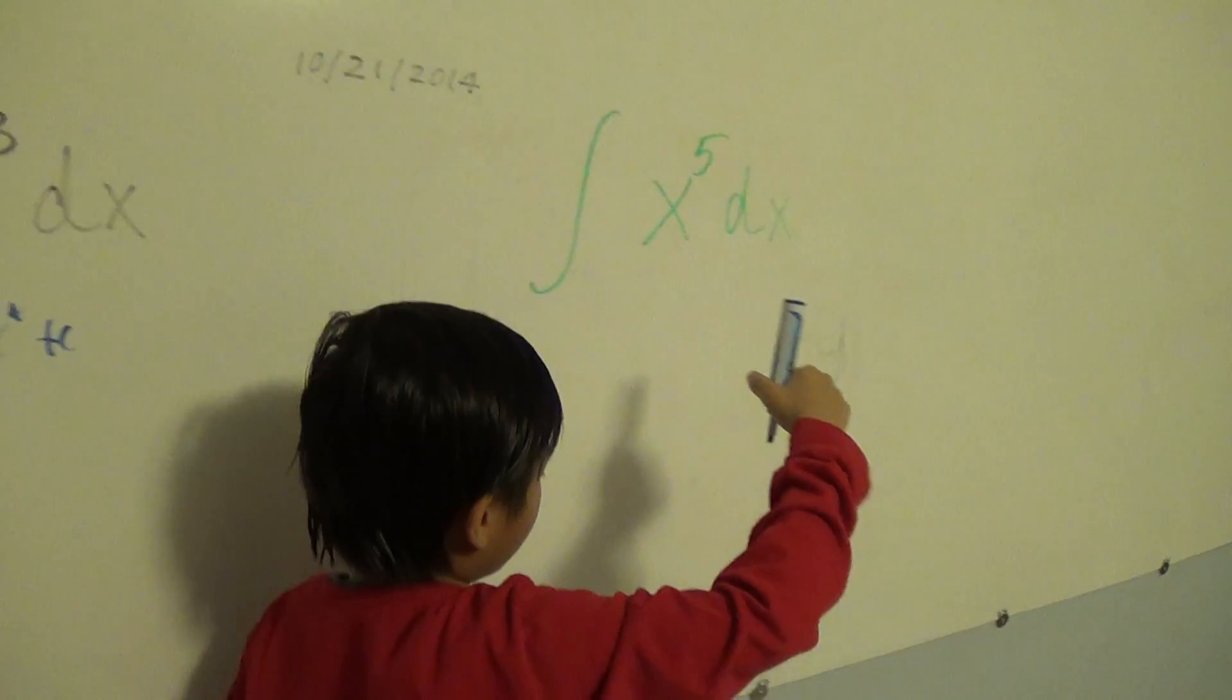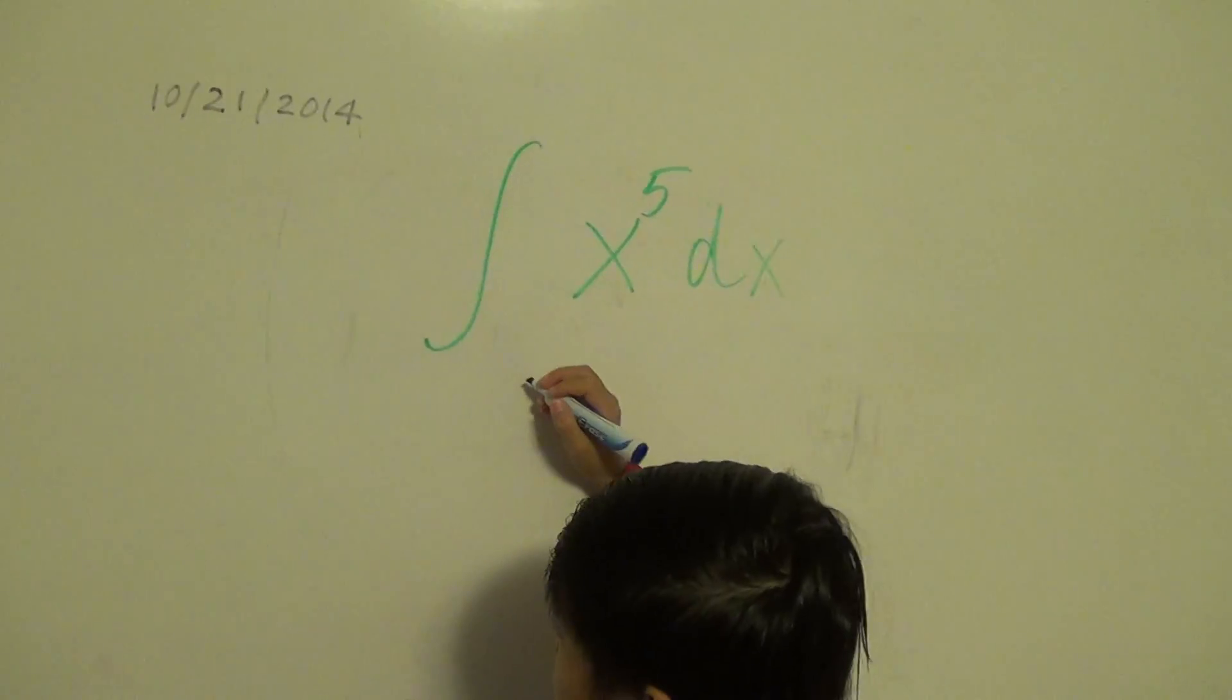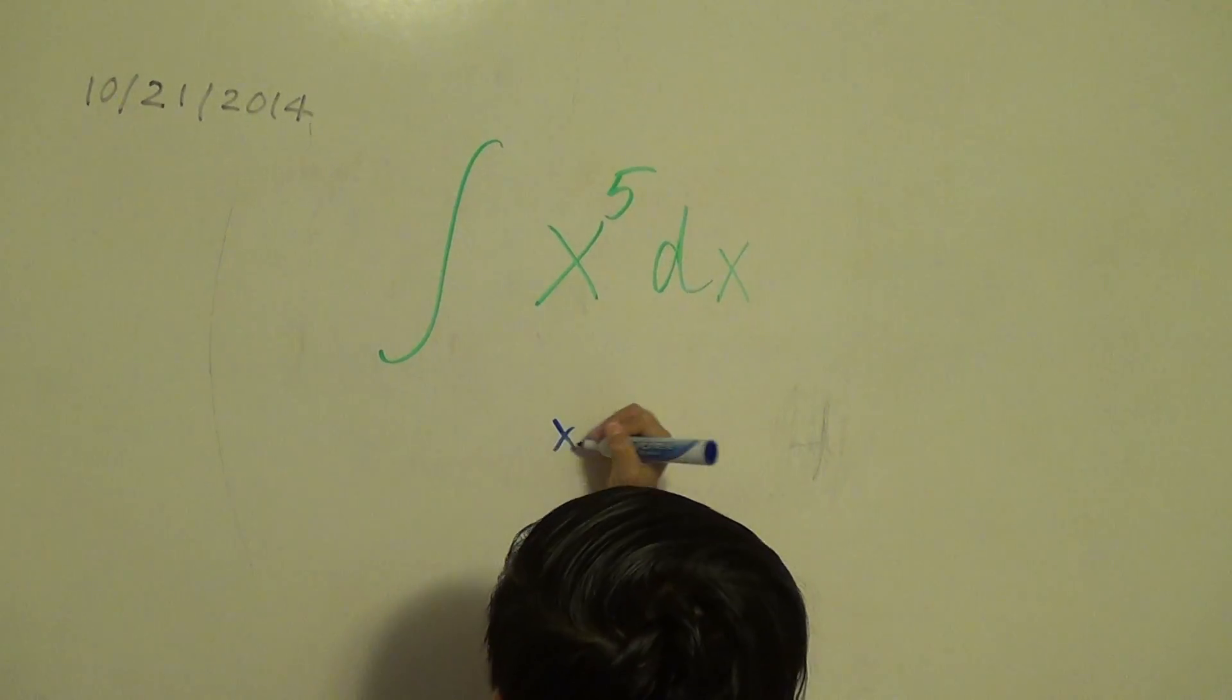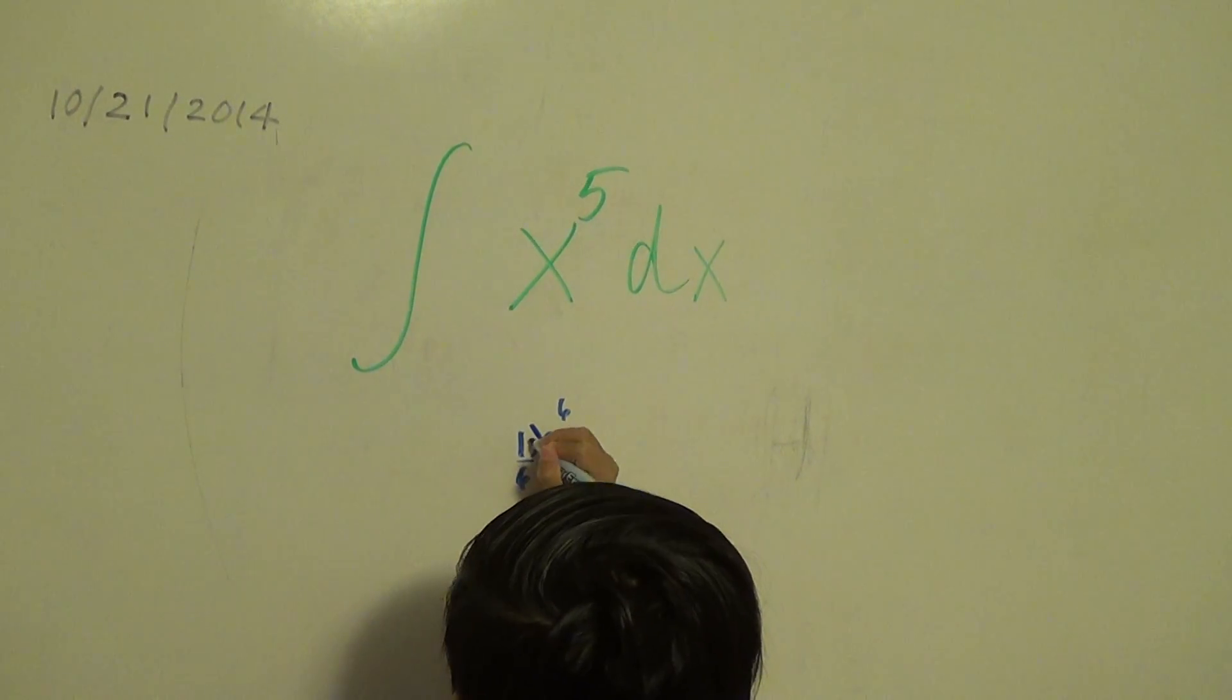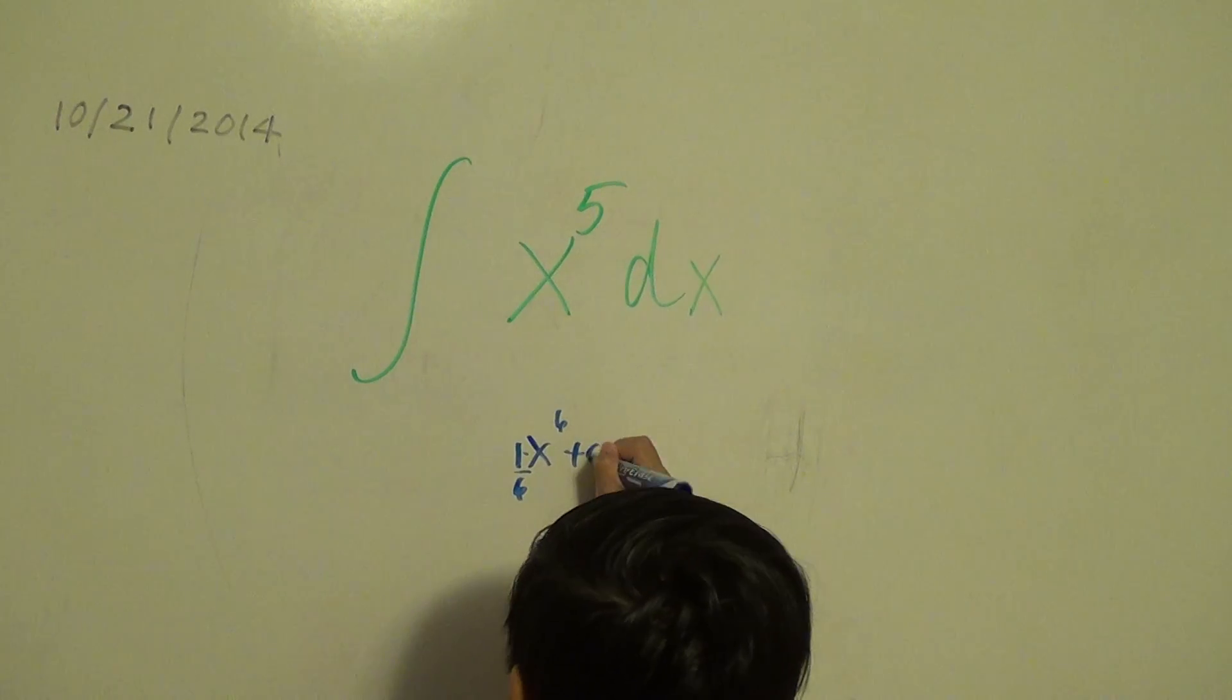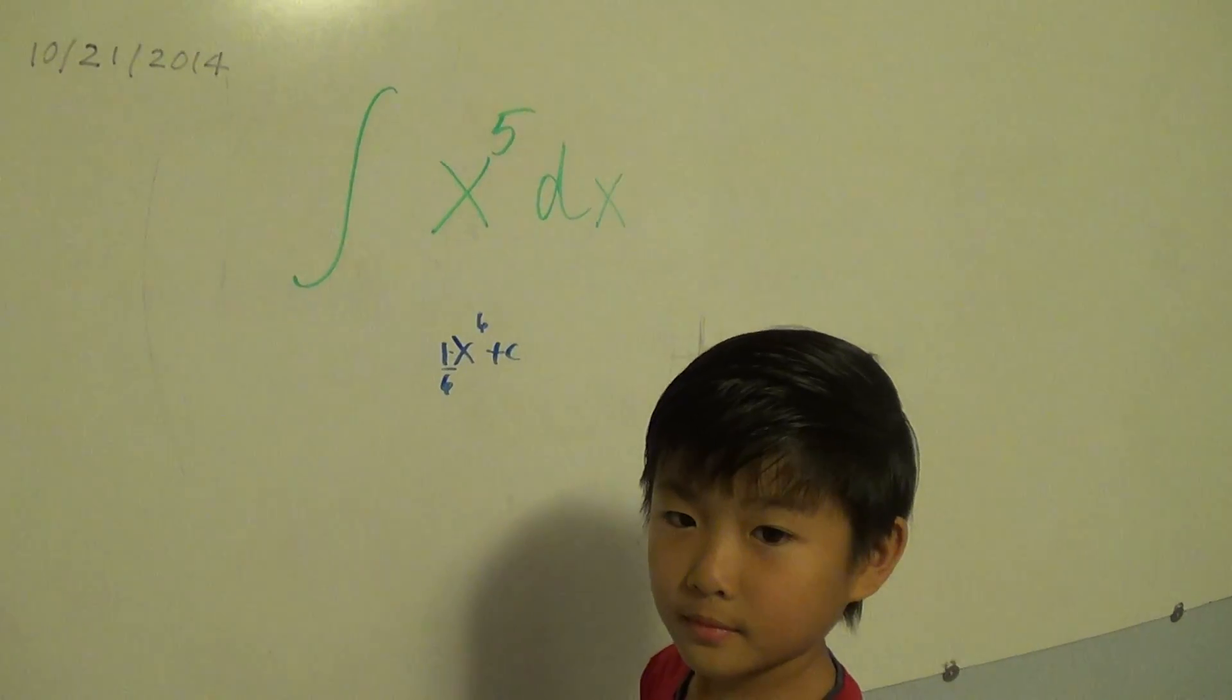Then, same thing with this rule, you do the same thing. X, and then you go up one number, which is 6, and then 1 over 6. Upside down, and then plus C.